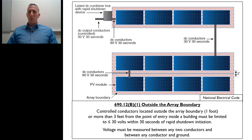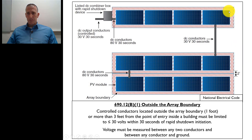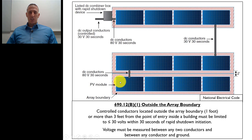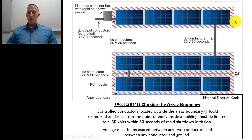In 690.12 B1 of the 2017 National Electrical Code, it goes into specific details about the conductors outside the array boundary. It states that controlled conductors located outside the array boundary — that one-foot boundary. If you take a look at this image, which is pulled from the 2017 National Electrical Code handbook, you can see the array outlined in blue, and the array boundary is one foot in each direction, outlined with those red hash marks.